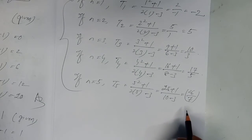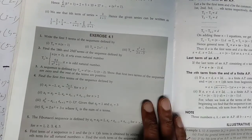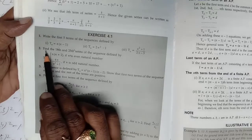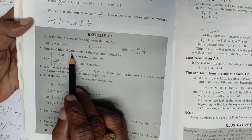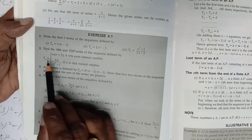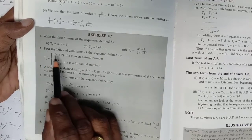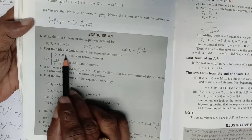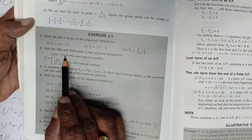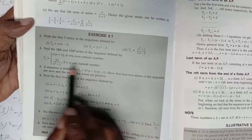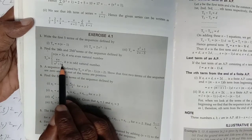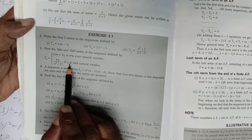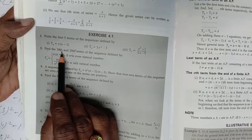Number 1 is completed. Let us go to the next number. I am going to Number 2. See the format given in the question very carefully. Find the 18th term and 25th term of the sequence defined by: Tn = n(n+2) if n is an even natural number, and Tn = 4n / (n² + 1) if n is an odd natural number. For the 18th term — is 18 even or odd? It is purely an even natural number.